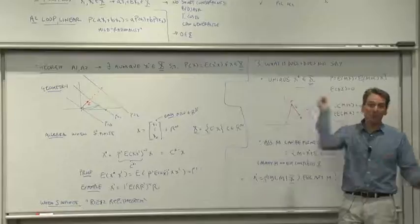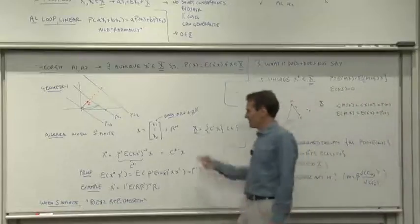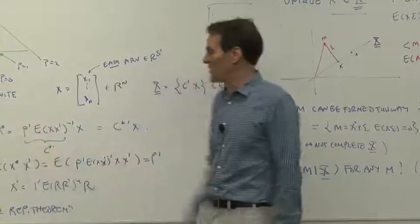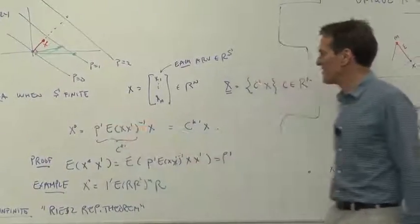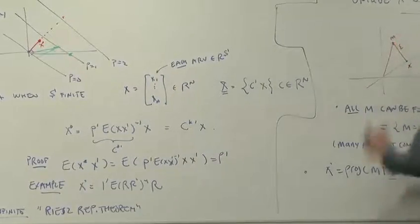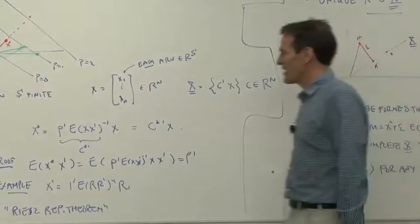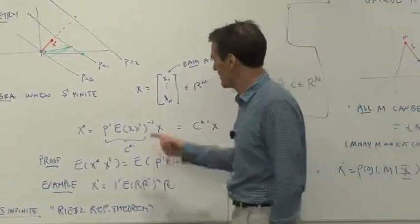I'm just going to pull it out of my hat, though if you take five minutes you can figure out what it is from first principles. There it is: p' [E(xx')]^(-1) x. Let's just check that that thing pulled out of a hat works the way it's supposed to work.